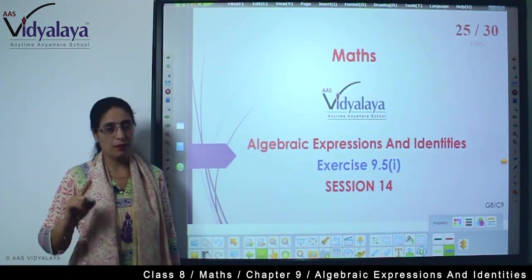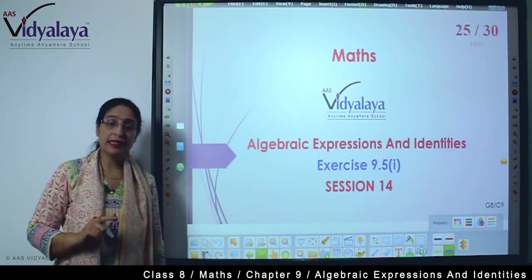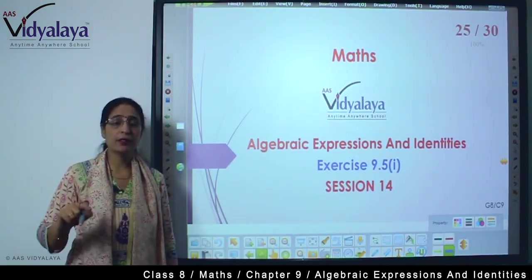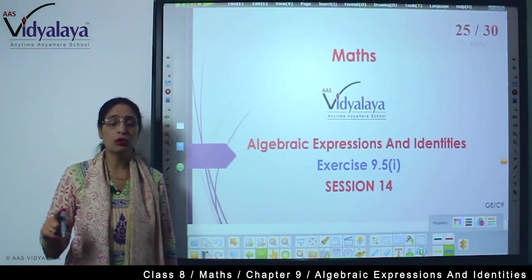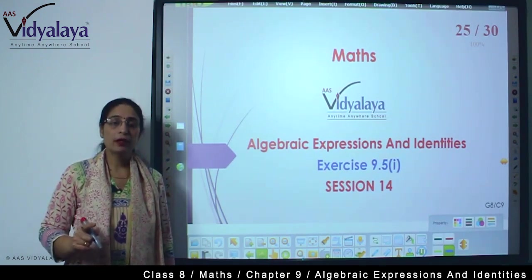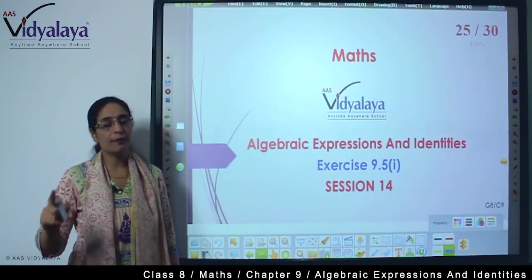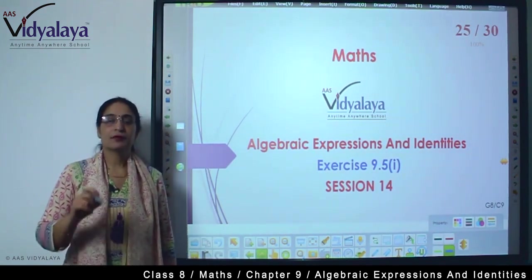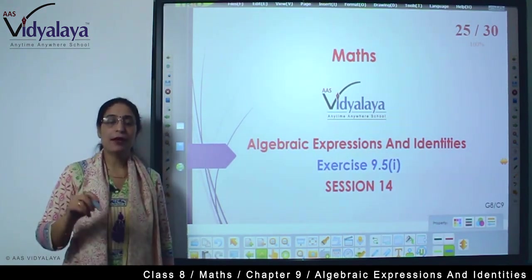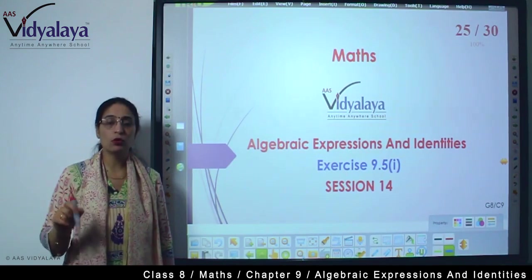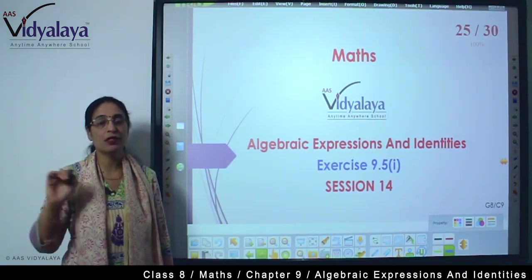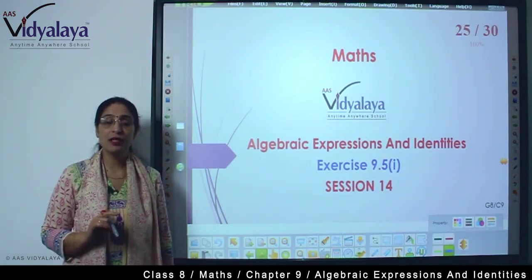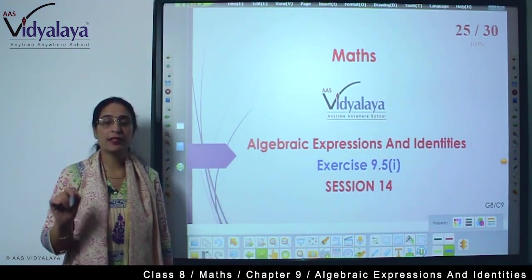Second identity: (a-b)² is equal to a² - 2ab + b². Third identity: (a+b)(a-b) is equal to a² - b².